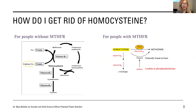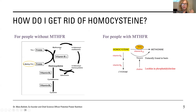For people without MTHFR, the way it works is this: I take methyl tetrahydrofolate, one of the active forms of folic acid. The methyl group is given to B12, then B12 becomes methyl B12. The enzyme that converts homocysteine back to methionine takes methyl B12. But this vitamin B12 has to be just cobalamin — it cannot be cyanocobalamin. We have to move that methyl group from folic acid, give it to B12, then give it to homocysteine. When homocysteine has a methyl group, it becomes methionine. It's called the methylation cycle.